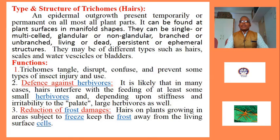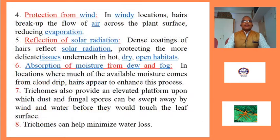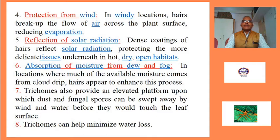3. Reduction of frost damage: Hairs on plant outgrowths in areas subject to freeze keep the frost from living surface cells. 4. Protection from wind: In windy locations, hairs break up the flow of air across the plant surface, reducing evaporation. 5. Reflection of solar radiation: Dense coating of hairs reflects solar radiation, protecting the more delicate tissue underneath in hot, dry, open habitats.